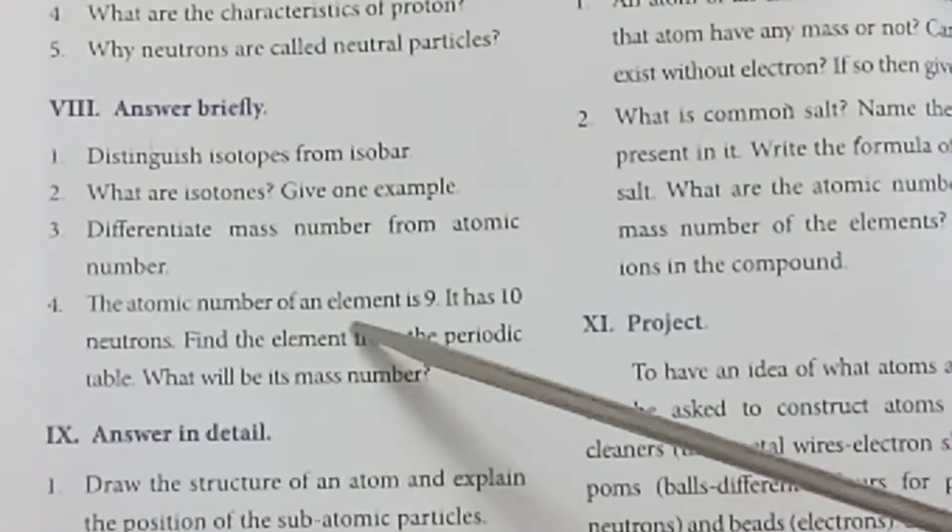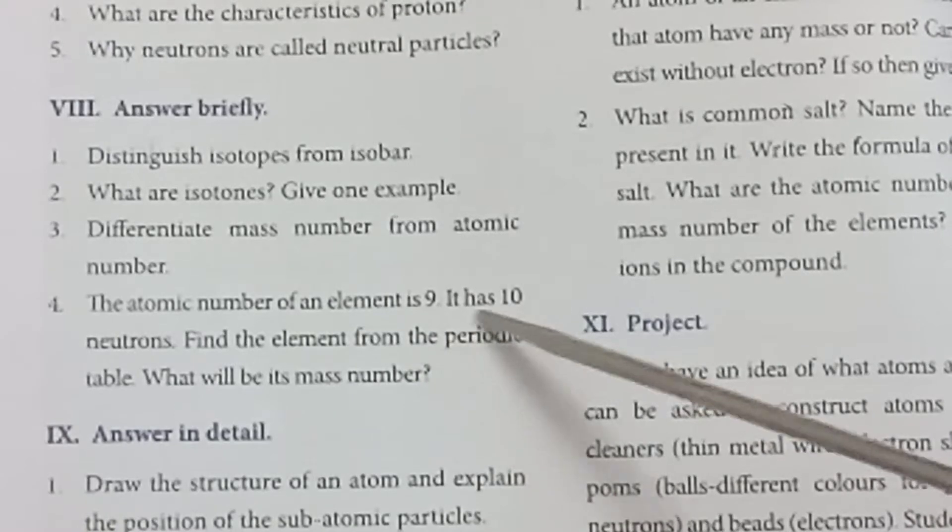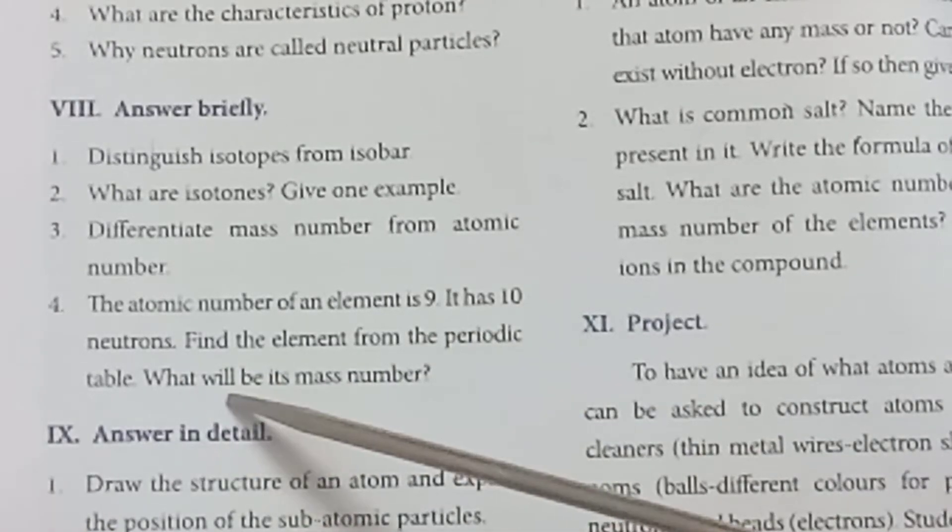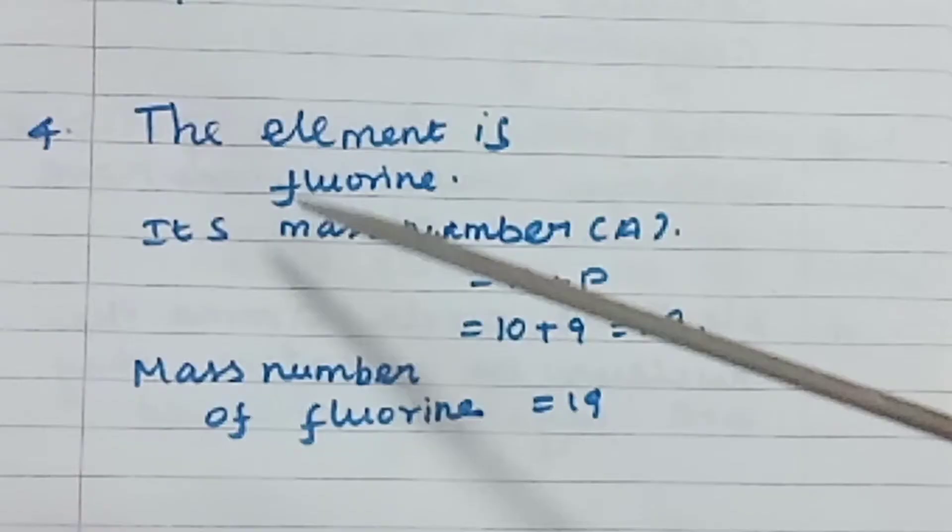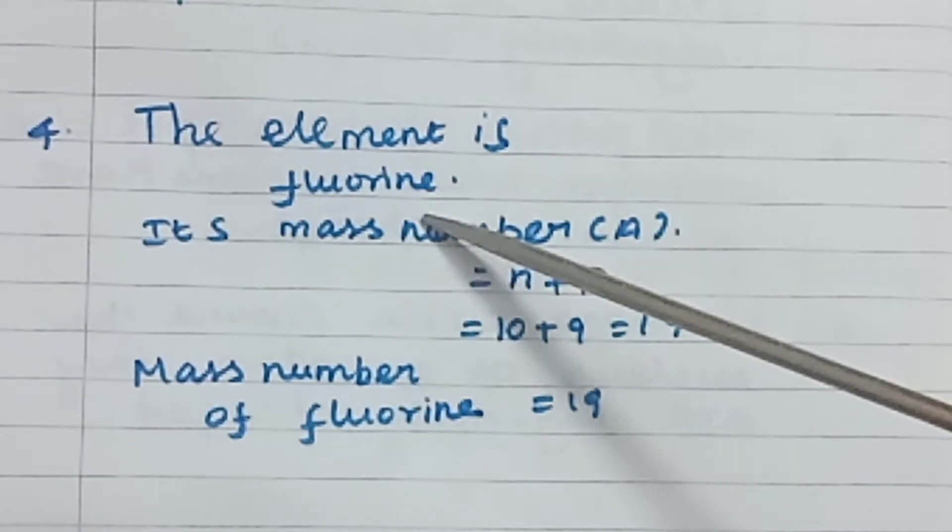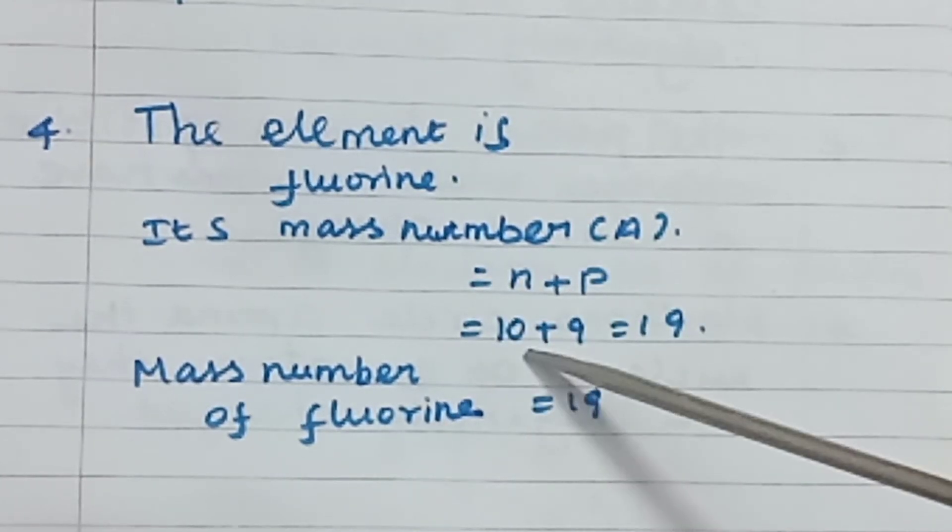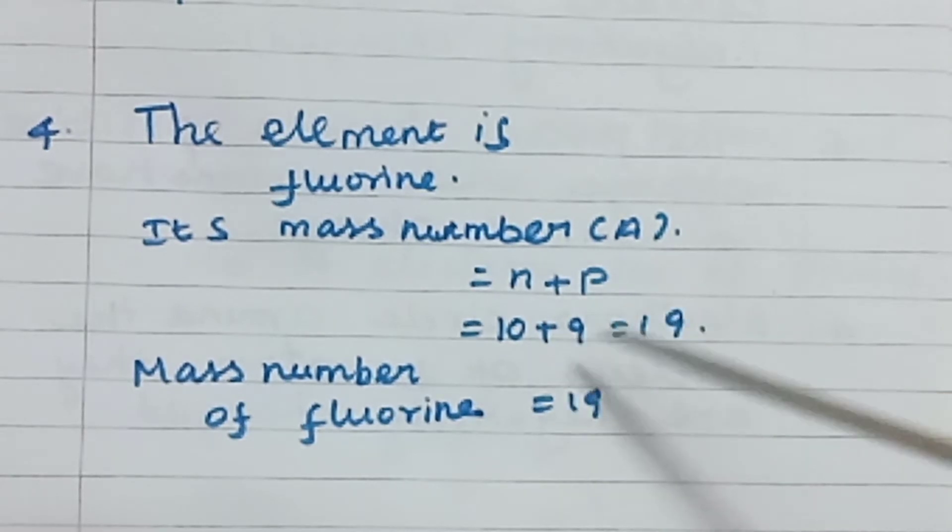Fourth question: The atomic number of an element is 9 and it has 10 neutrons. Find the element from the periodic table. What will be its mass number? The element is fluorine. Mass number A equals neutron plus proton. N equals 10, proton 9, so 19. Mass number of fluorine is 19.